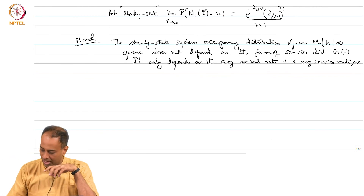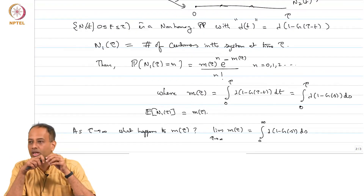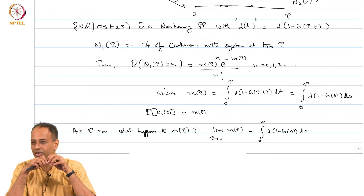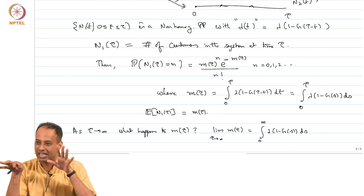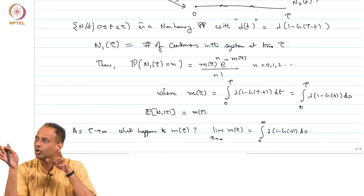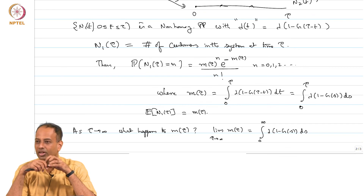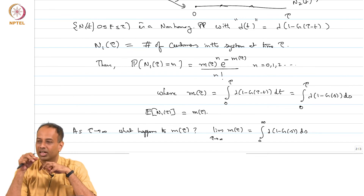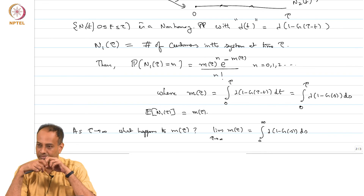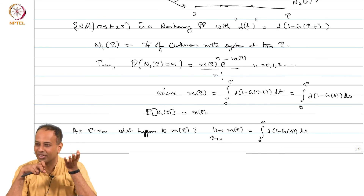Regarding the question about superposition of two non-homogeneous Poisson processes with rates λ₁(t) and λ₂(t): if they are independent, the merged process should still be a non-homogeneous Poisson process. The IIP property would still follow. The probability of an arrival in any one of them — it seems that is correct; the merged rate would be λ₁(t) + λ₂(t). Please verify it.